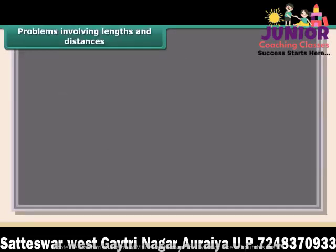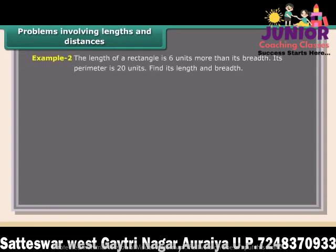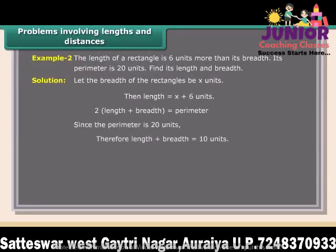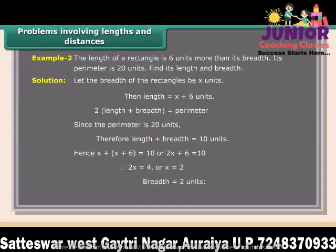Problems involving lengths and distances — Example: The length of a rectangle is 6 units more than its breadth and its perimeter is 20 units. Find its length and breadth. Let breadth be X units; then length equals X plus 6. Since perimeter is 20, length plus breadth equals 10. So X plus X plus 6 equals 10, giving 2X equals 4 and X equals 2. Breadth equals 2 units and length equals 8 units.